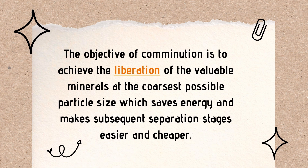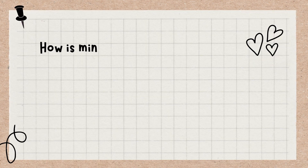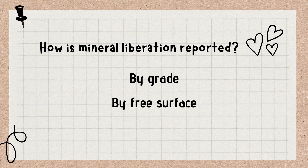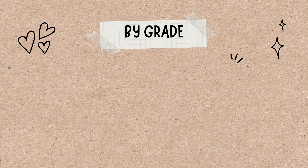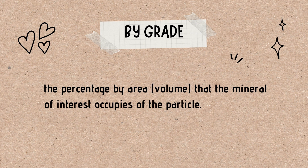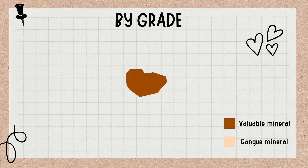So how is mineral liberation reported? It is reported by grade and by free surface. The grade is the percentage by area or volume that the mineral of interest occupies of the particle. For example, 100% of the total volume of the particle is liberated.